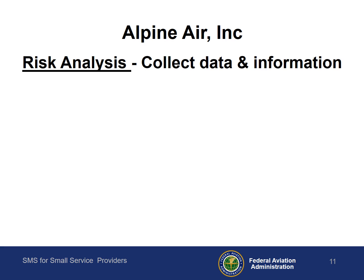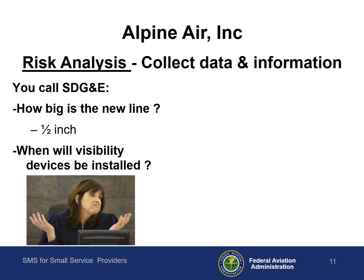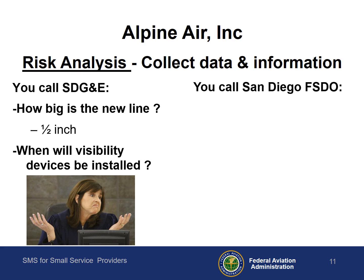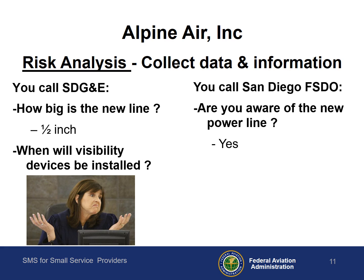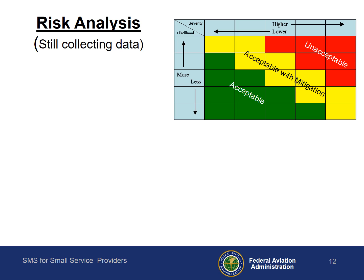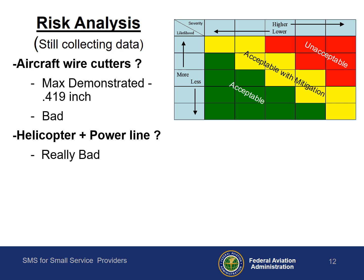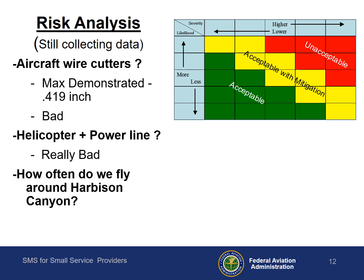Now it's time to analyze the risk that this hazard poses. You need some additional information, some data. You call the electric company and ask how big is this new line. Half inch, they reply. When will you get visibility markers installed? There's silence on the other end of the phone. You call the FISDO and ask if they are aware of the new power line. Yes, they say. Can you do something about the visibility markers? Yes, but it'll take some time. You find the operator's manual for the wire cutters on your helicopter and find that the maximum demonstrated cutting capacity is .419 inch. That's bad. You think about what happens when a helicopter and a power line interact — that's really bad. And you already know how often you fly through Harbison Canyon, and that's a lot.